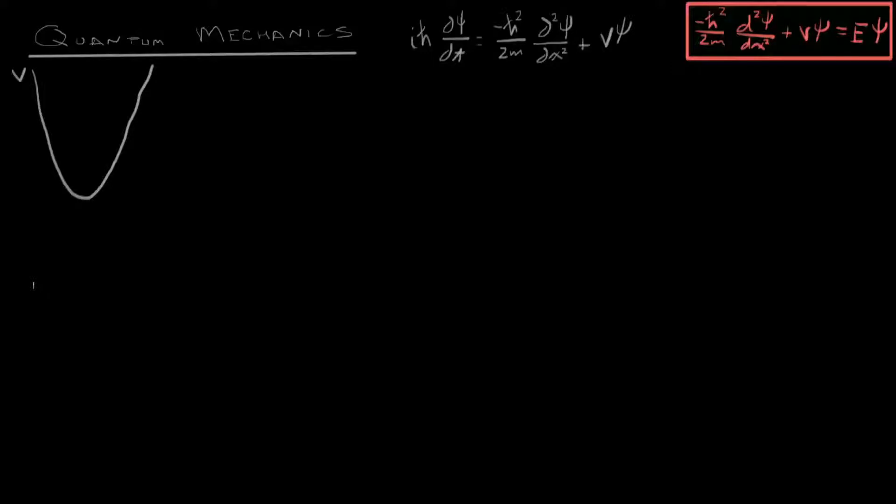However, suppose I were to change the potential profile, and instead of making it an all or nothing, which is basically what we did, I'm going to make it look like a parabola. Now, how are things going to act? What will the energy look like? How will stationary states relate to each other? What does the math look like? These are the questions of the simple harmonic oscillator.